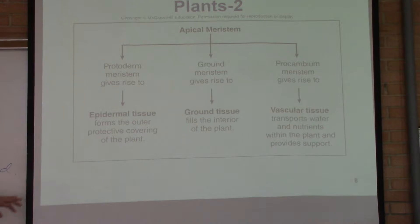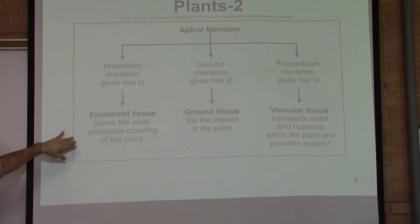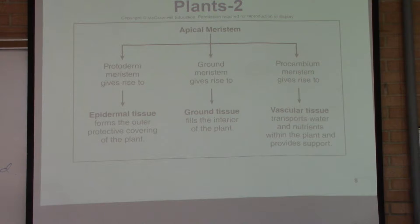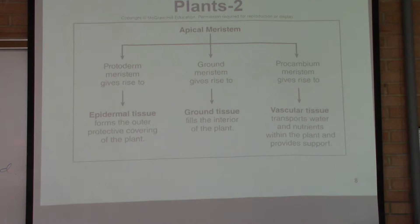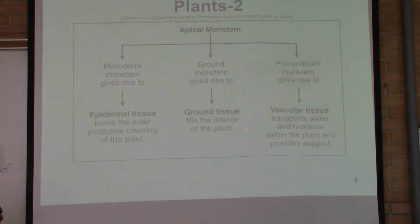Epidermal tissue makes the outer protective covering of the plant. Ground tissue fills the interior — it is the base and bulk of the plant; most cells of the plant are ground tissue. Vascular tissue is the transport system of the plant, carrying nutrients and liquids. Things are absorbed from the ground up, and products made in the aerial part of the plant are carried back or distributed within the plant by the vascular tissue.